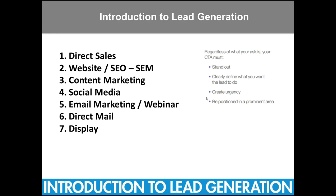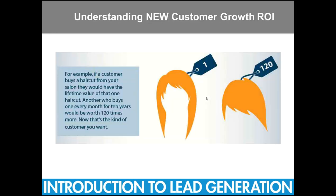Any CTA — any call to action — has to stand out, clearly define what you want your lead to do, create urgency, be positioned in a prominent area, and it should be mobile first. I talk a lot about the finesse required to get somebody to opt in. I was on a call this morning with someone who said they put something on there that says 'Text this word to this short code to get more information.' Why would you ever say that? Does that call to action stand out? Does that create urgency? Is that the finesse required to capture their mobile number? Because that's the most vital piece of information we could ever have.